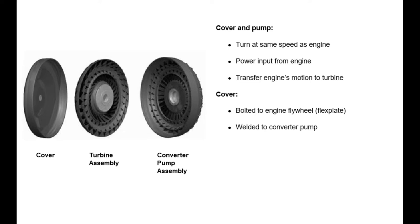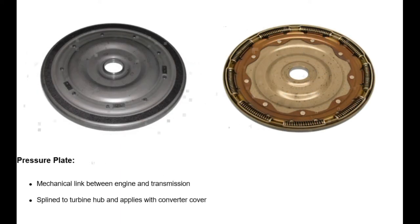The cover and pump also transfer the engine's motion to the turbine. The converter pump is a driving member. The cover of the torque converter is bolted to the engine flywheel and flex plate, and is welded to the converter pump. The pressure plate provides a mechanical link between the engine and the transmission while dampening engine vibration.